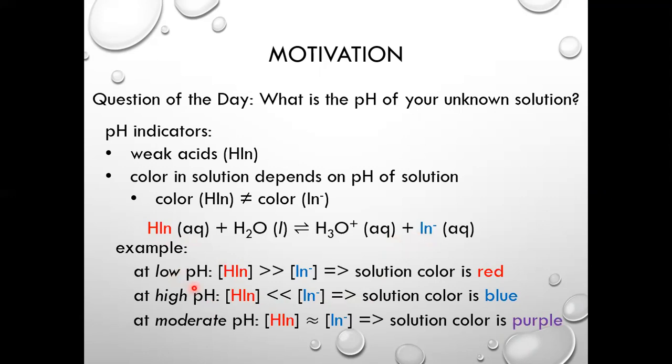Somewhere in between what we're defining as low and high, you might expect conditions where the concentration of the protonated form and the deprotonated form are approximately the same. Under those conditions, the solution color is somewhere in between. In this example, if the protonated form is red and deprotonated is blue, the solution might be purple.